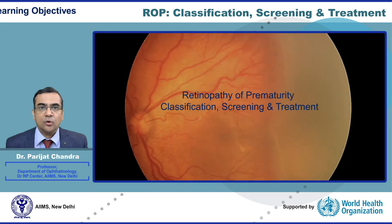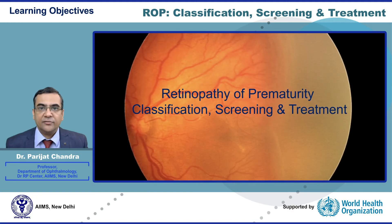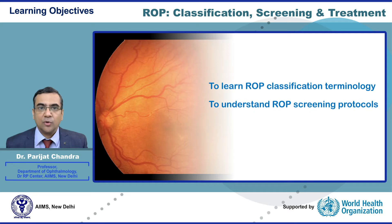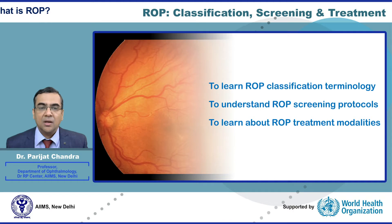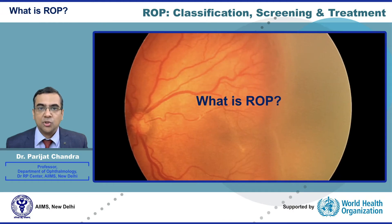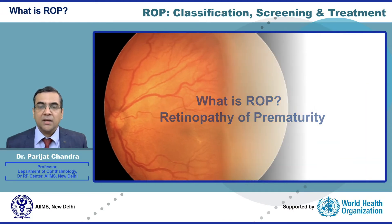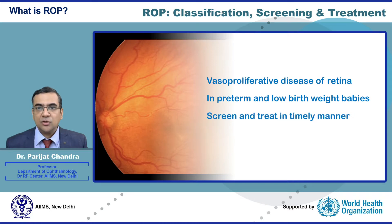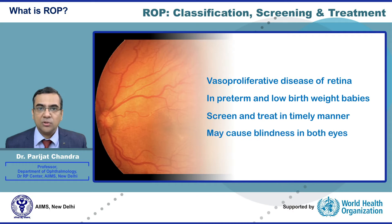Hello, I will be talking to you about ROP classification, screening and treatment. The objectives are to learn ROP classification terminology, to understand the ROP screening protocols and to learn about various ROP treatment modalities. ROP is short for retinopathy of prematurity. It is a vasoproliferative disease of the retina seen in preterm and low birth weight babies. It is essential to screen and treat it in a timely manner, else it may cause blindness in both eyes.